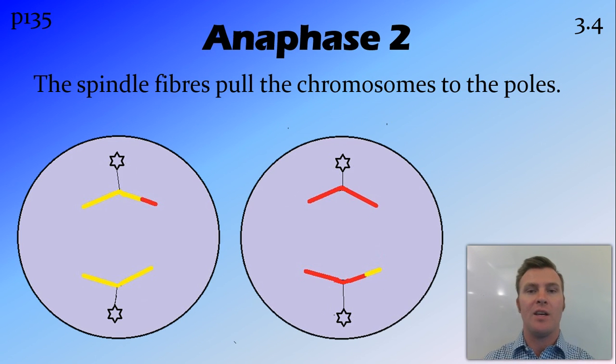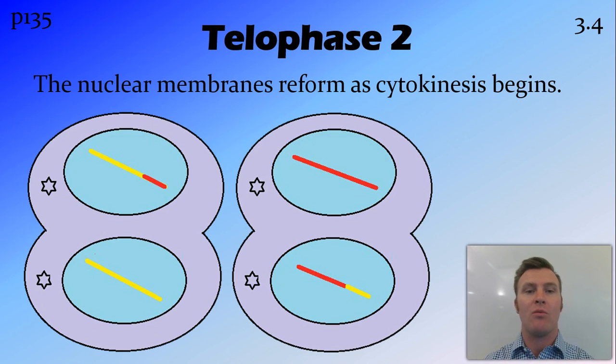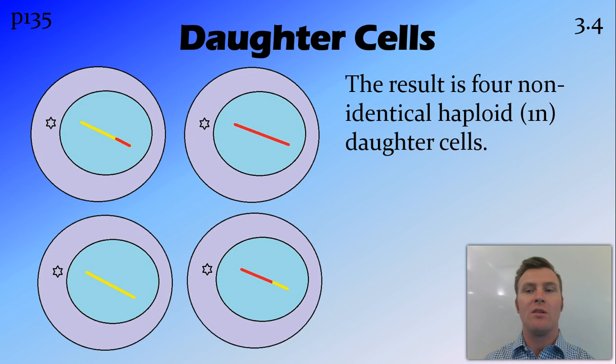We then move into anaphase 2, where those spindle fibres pull the chromosomes to the poles of the cell. The cell membrane then reforms as cytokinesis begins, resulting in 4 non-identical haploid daughter cells.